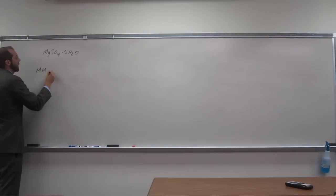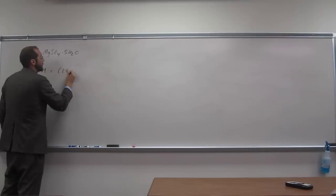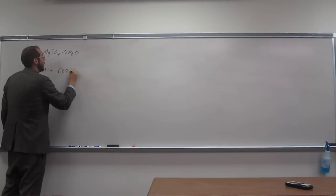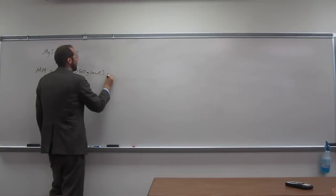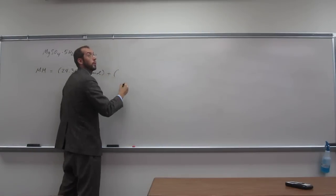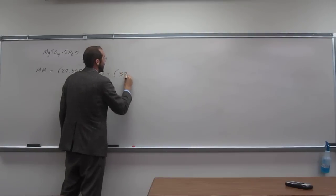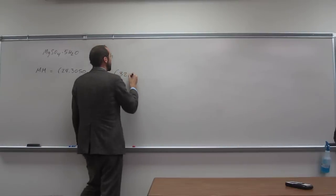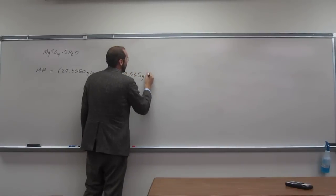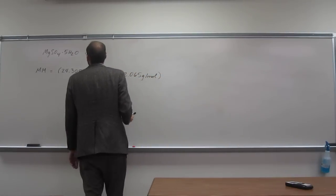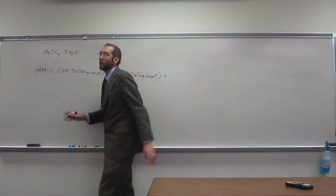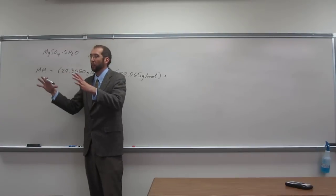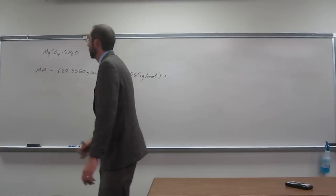So, molar mass of this compound is going to be one times magnesium, so 24.3050 grams per mole plus one times sulfur, 32.065 grams per mole. And then, some people would like to do all the oxygens together. I like to just keep the water molecules separate because I know water is 18.02.